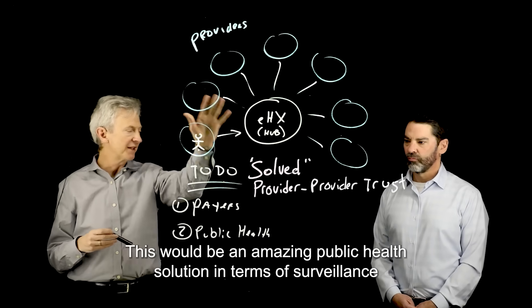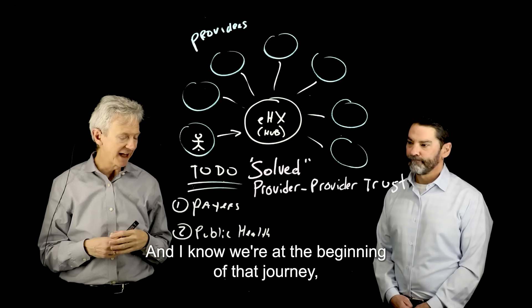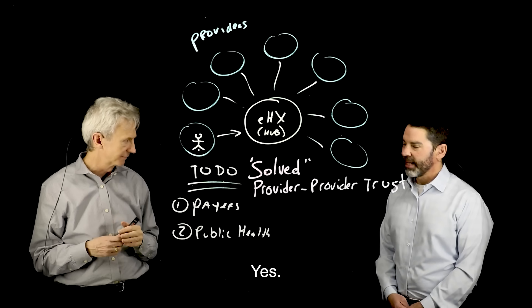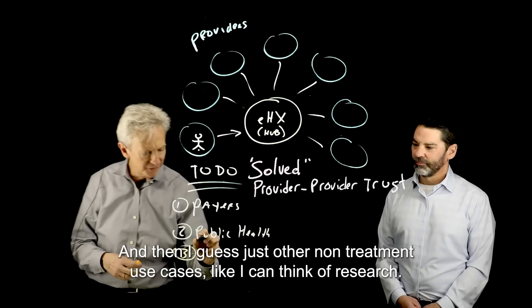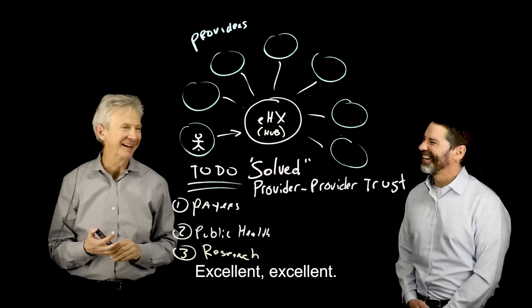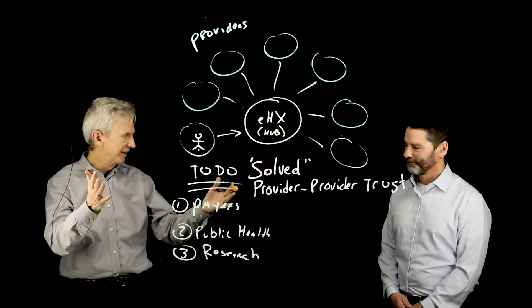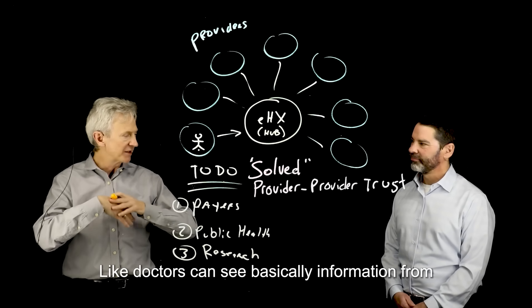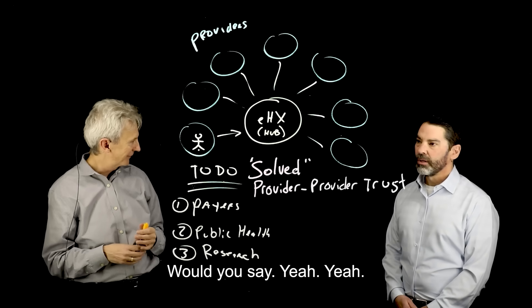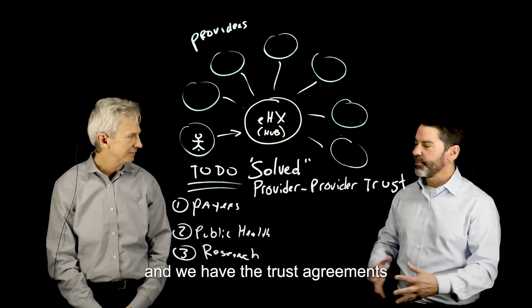Public health would be an amazing solution in terms of surveillance, adverse events, and things like that, and we've started making progress there. We've done a good job, not a great job, of getting public health the data they need — we can discuss that in another segment. There's also work starting with NIH on research use cases. Interoperability over the last 10 years has gone way ahead — doctors can now reliably see information from outside their organization when treating a patient. But there's a lot to do over the next decade, and the good news is we have the architecture, the patterns, and the trust agreements to make it happen.